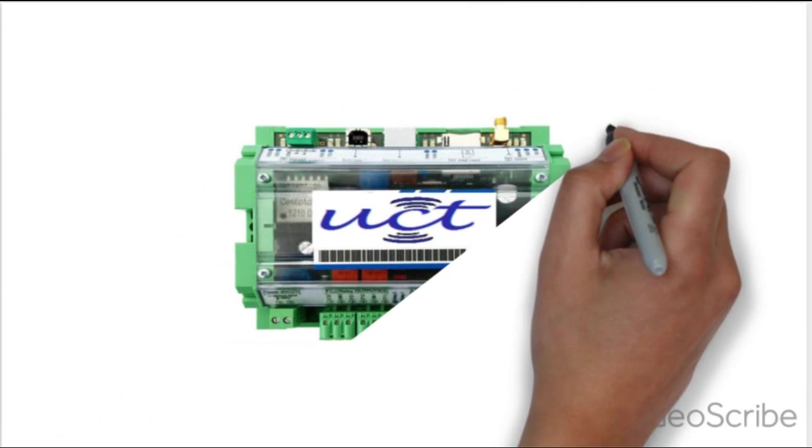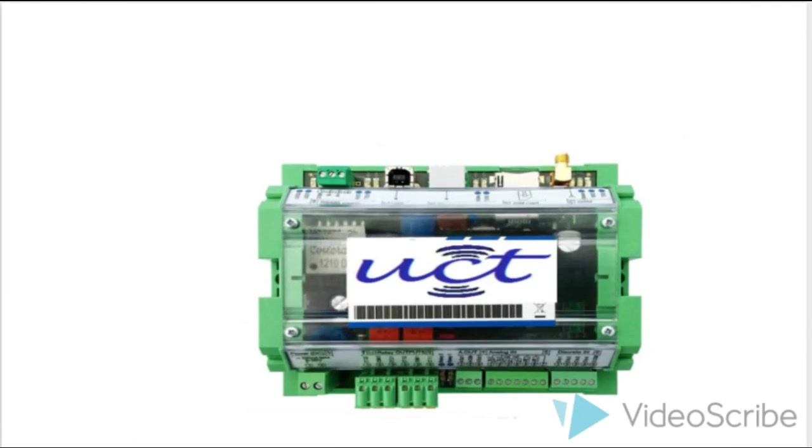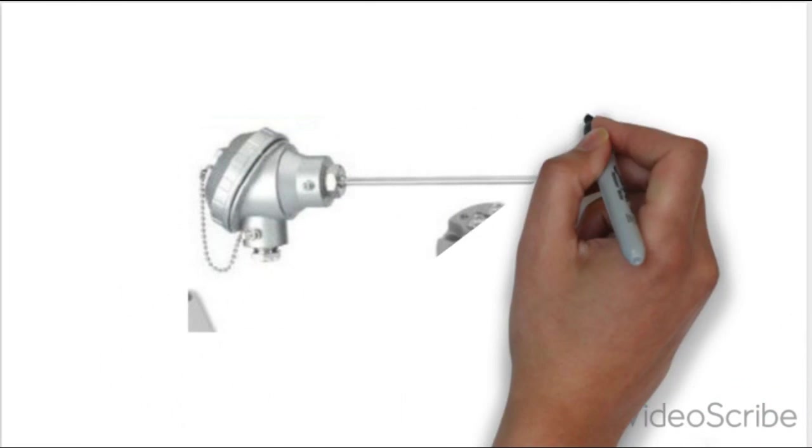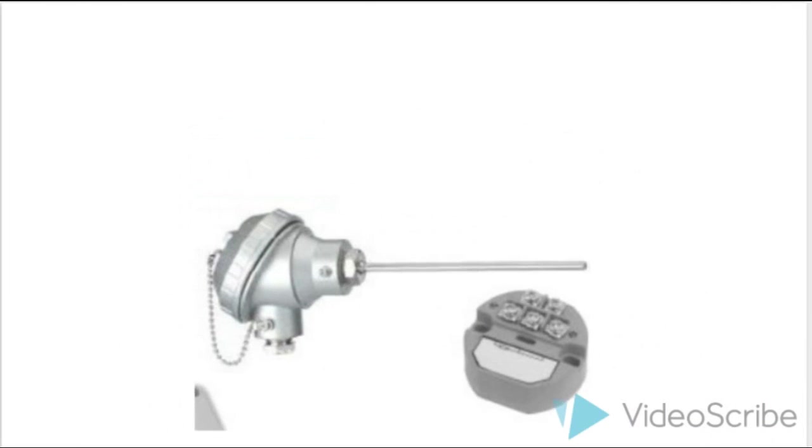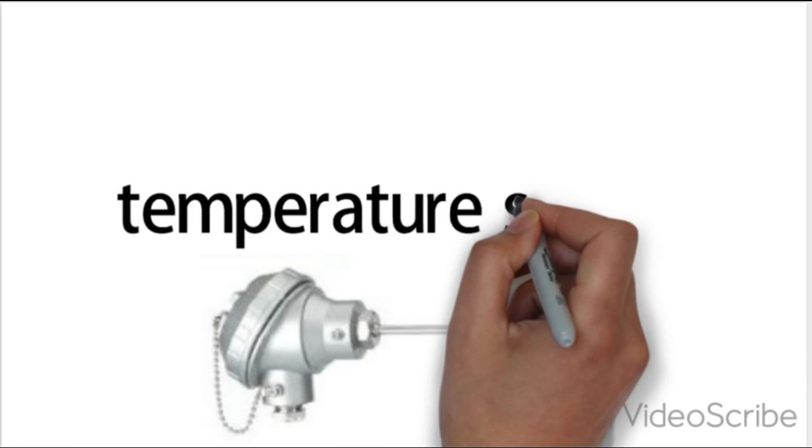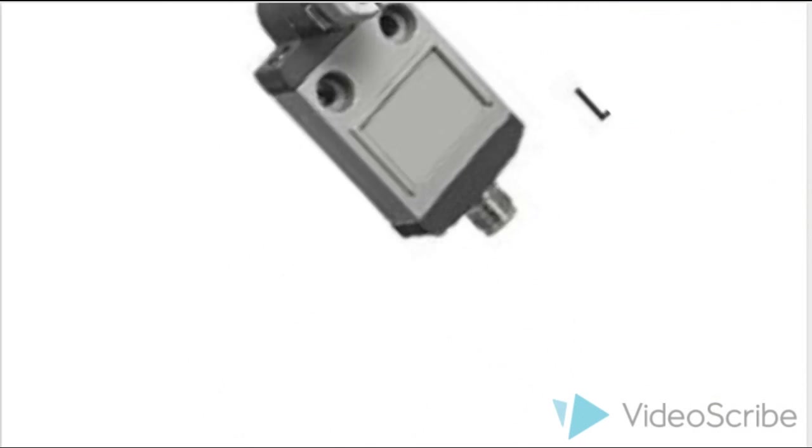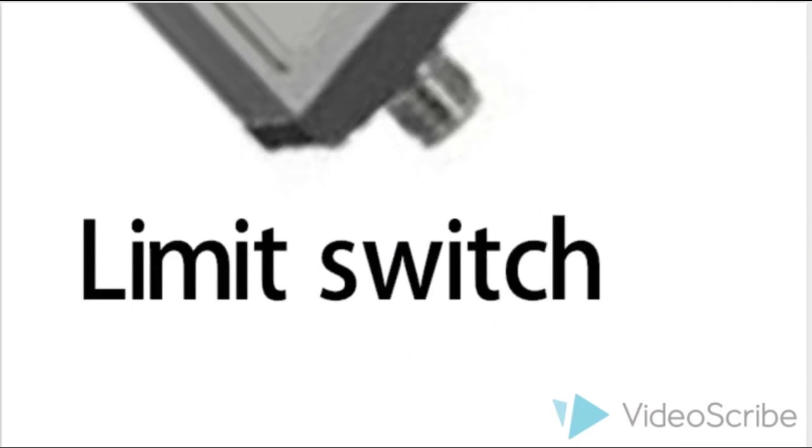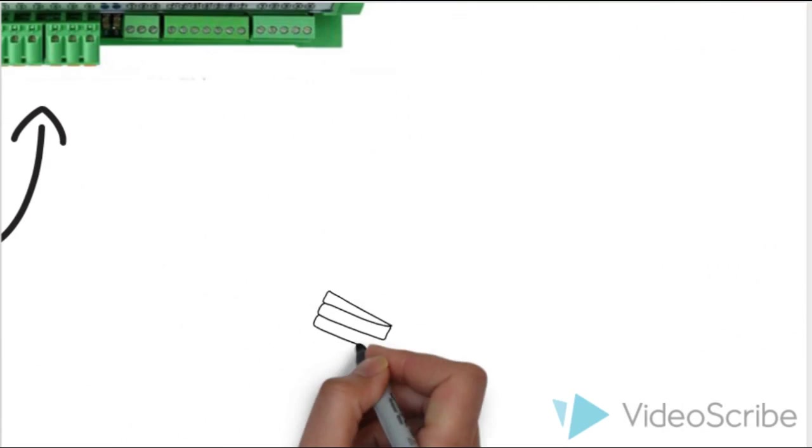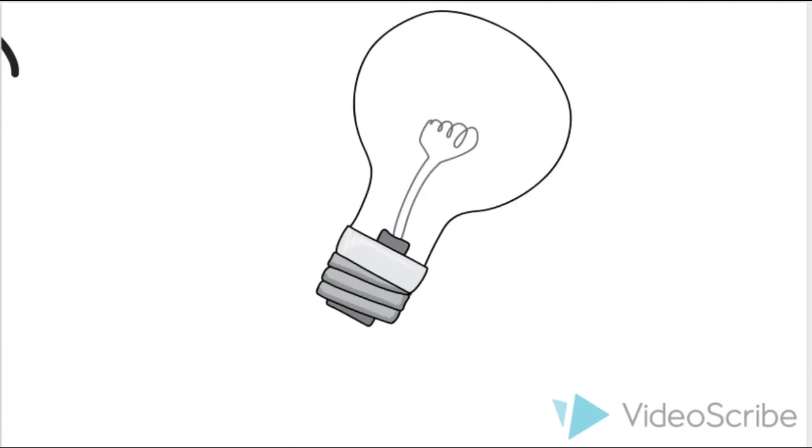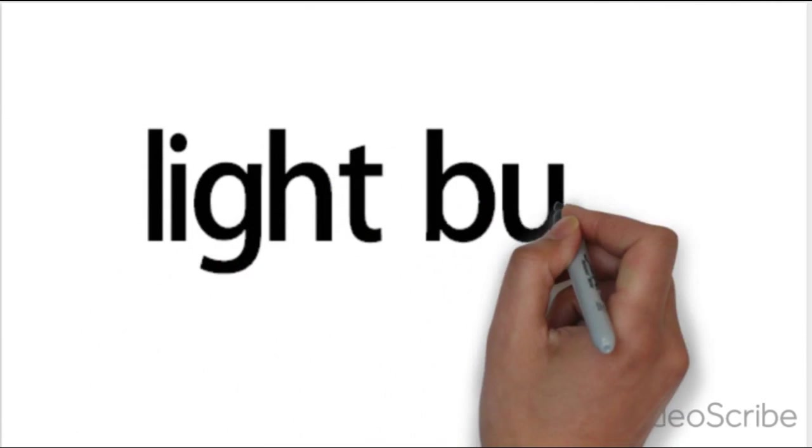This is our UCD data aggregator. It is a temperature sensor which is connected to analog input of our data aggregator. It is a limit switch which is connected to digital input. And a light bulb which is connected to our digital output.